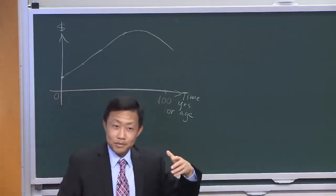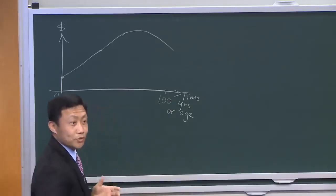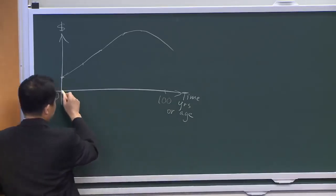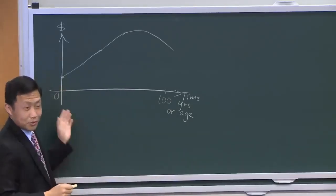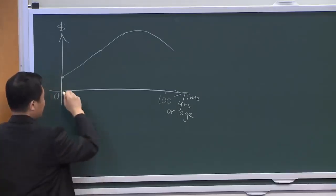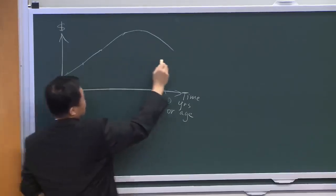And the other curve you think about is what's your income? What's your earnings curve? You don't earn anything when you're just born, but you're earning. So this is spending.